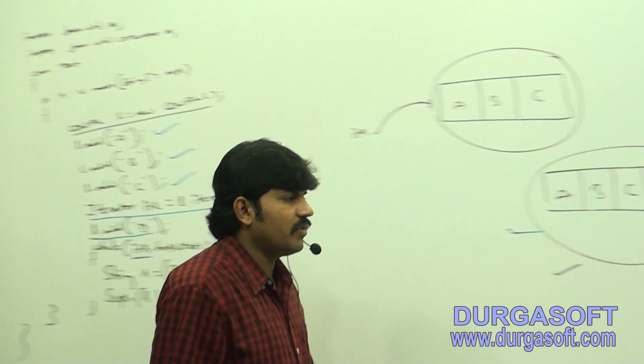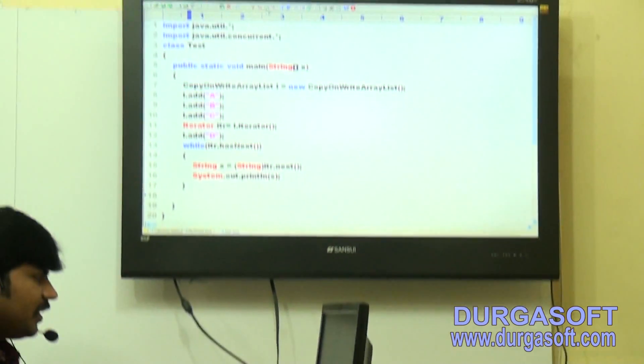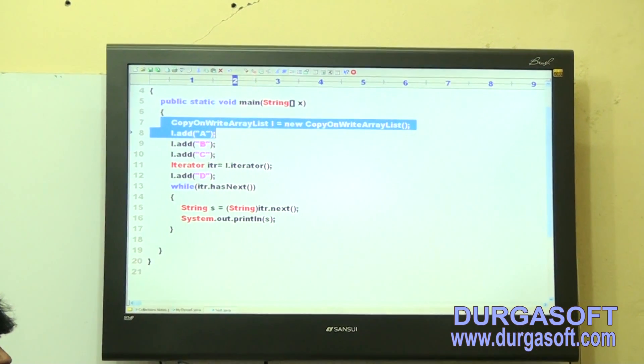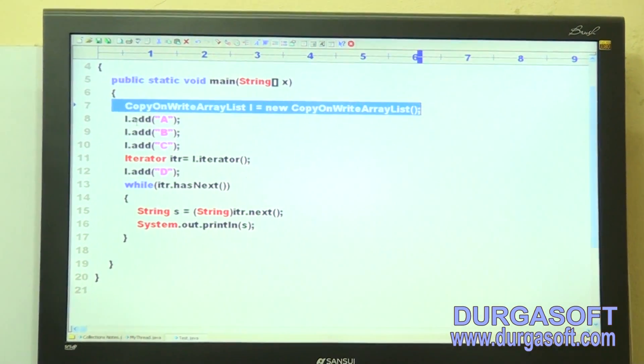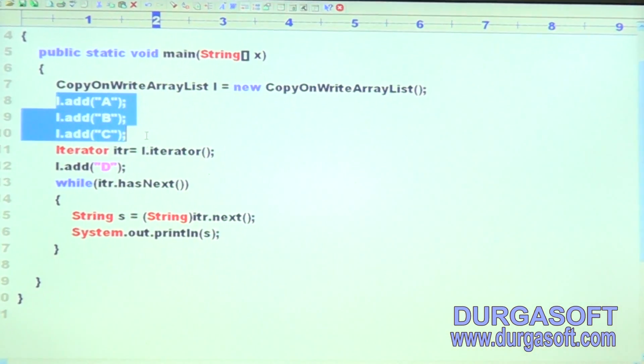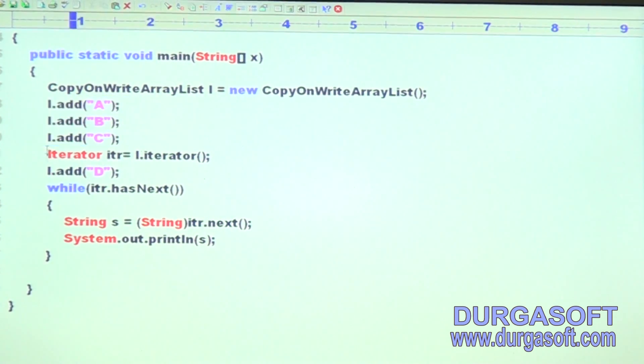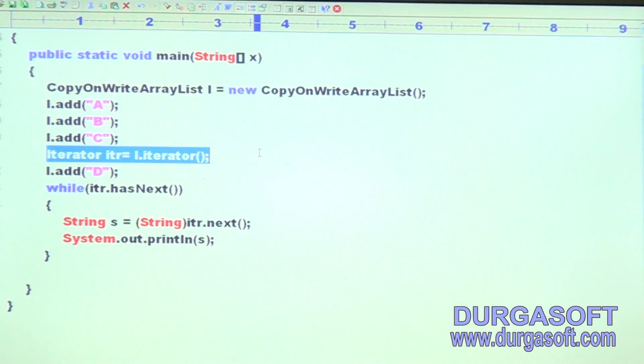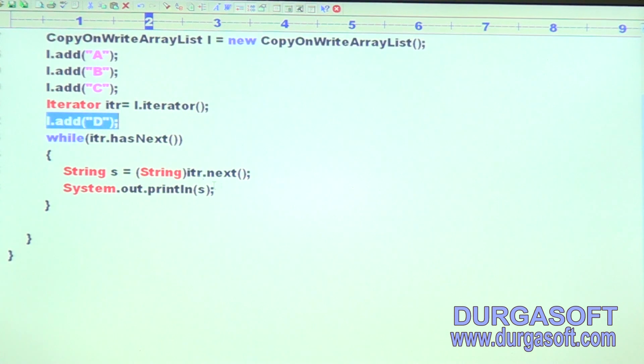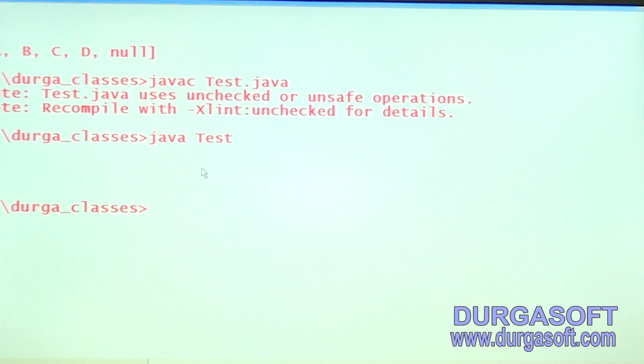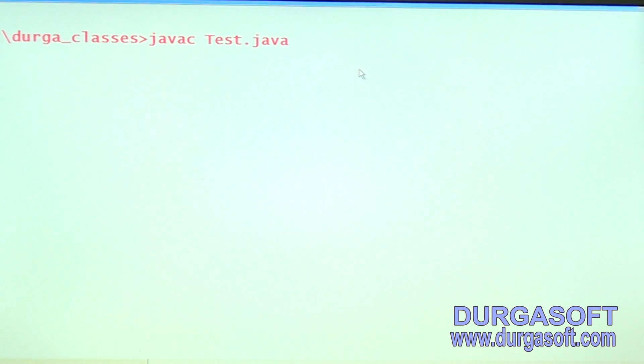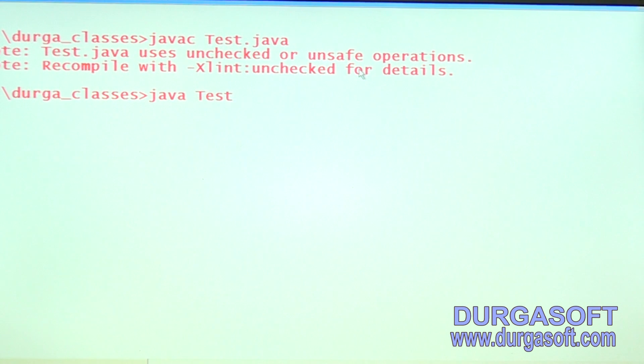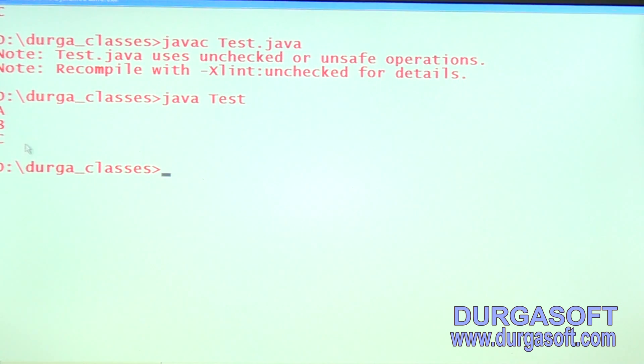Let me explain. Have a look once. Here, same example. I took CopyOnWriteArrayList. L dot add A, B, C. After adding A, B, C, now I got iterator. But after getting that iterator, I am trying to add D. While iterator has next, String S is equal to String S out print S. Have a look once. Here, compile is fine. The answer by default, we will get A, B, C only, but not A, B, C, D.